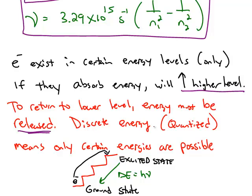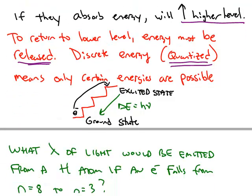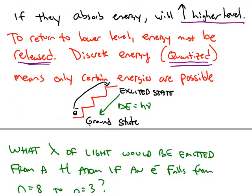Only discrete values of energy are seen. That's called quantization of energy. So this picture shows a staircase analogy to the electrons in an atom.